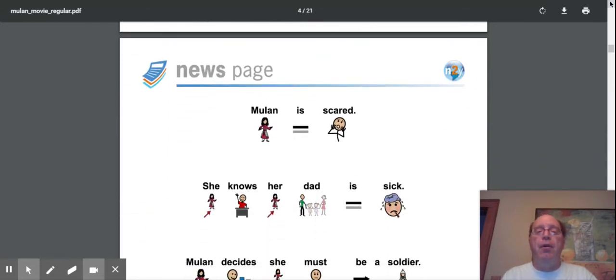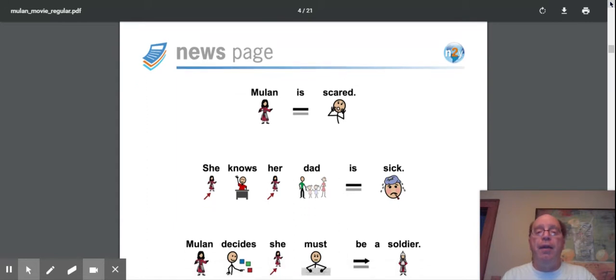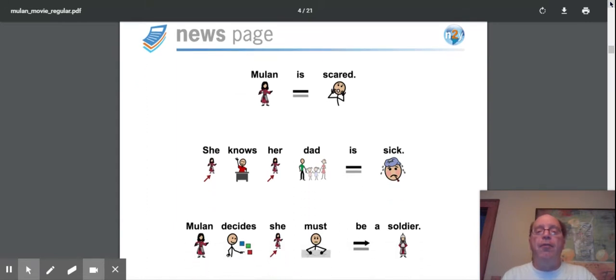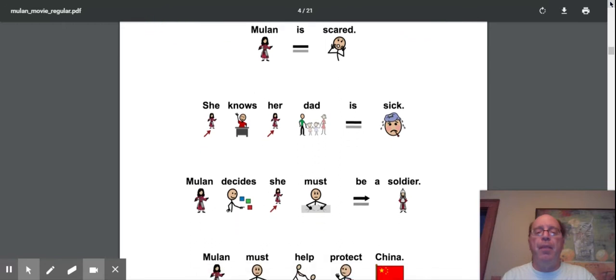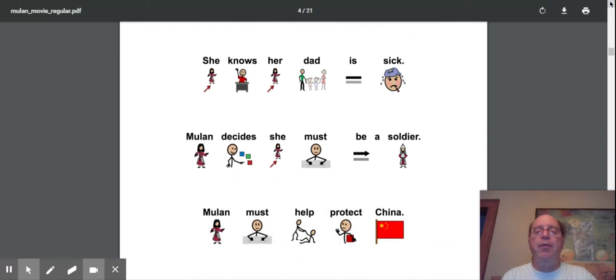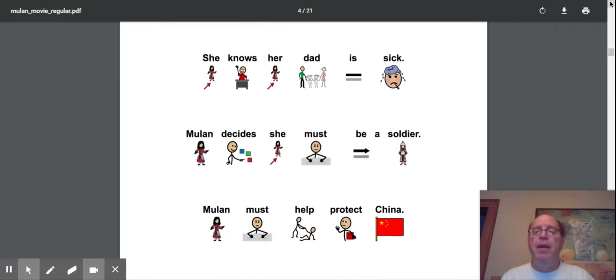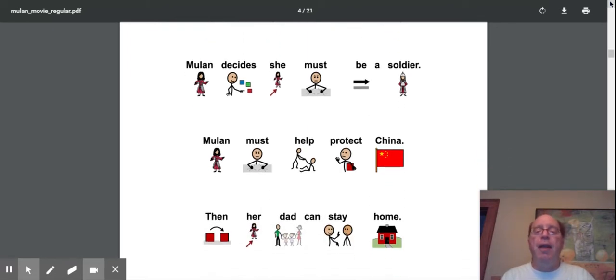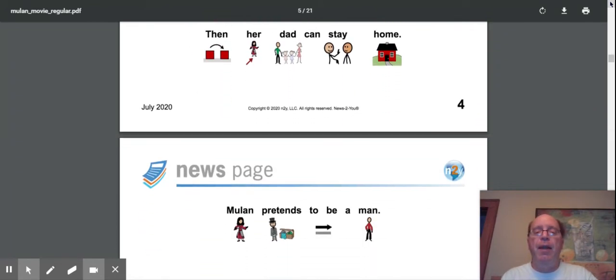Mulan is scared. She knows her dad is sick. Mulan decides she must be a soldier. Mulan must help protect China. But that's very brave of Mulan. I wonder if she'll get to be a soldier. And her dad can stay home. He's sick. He needs to be home. Well, let's find out what happens.